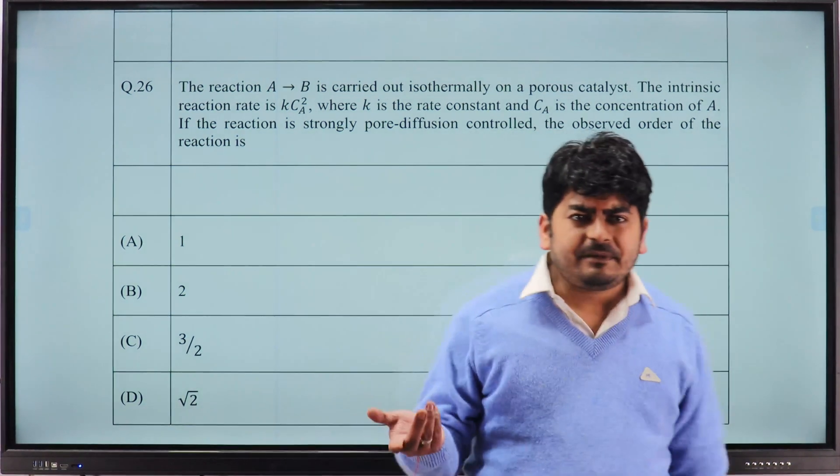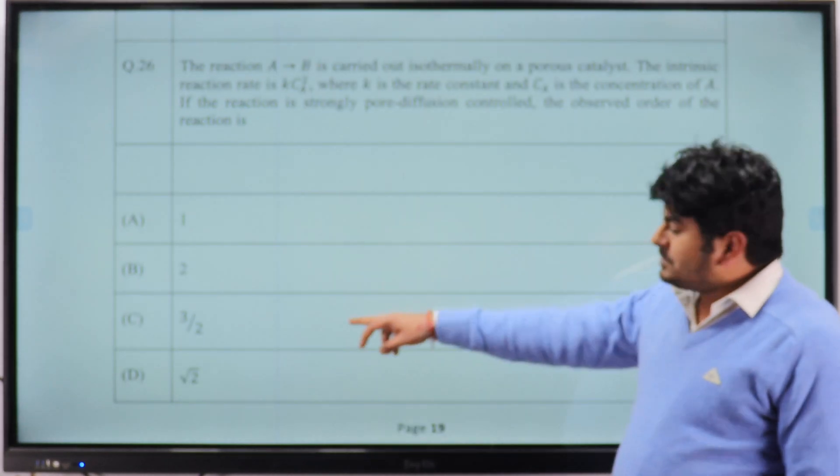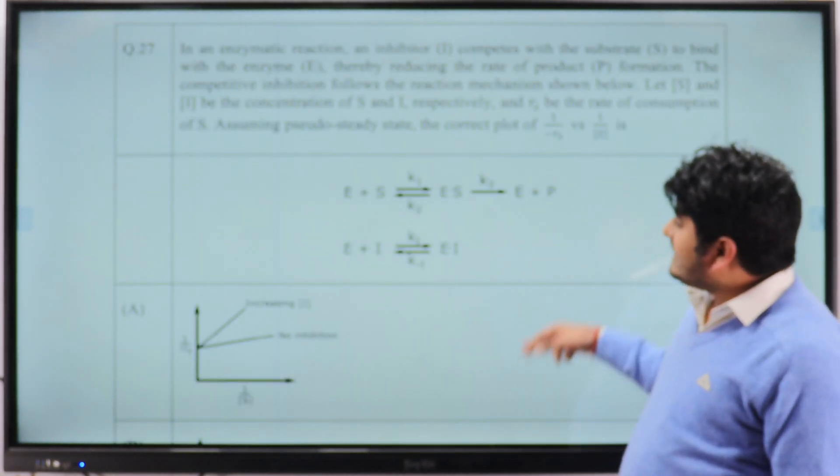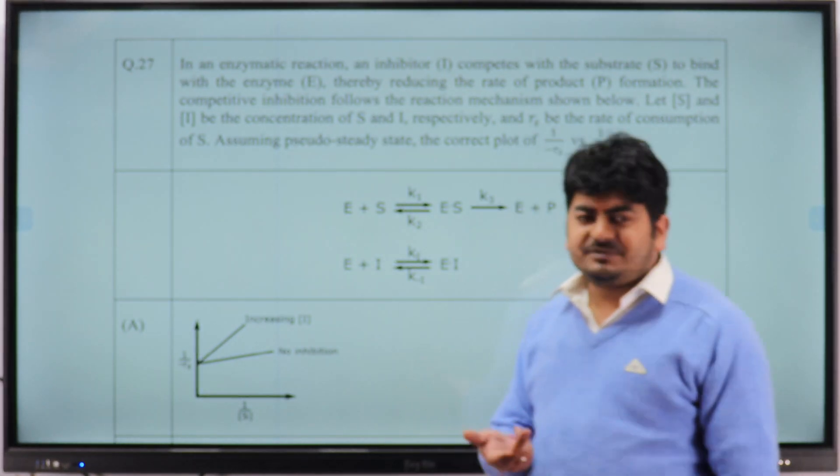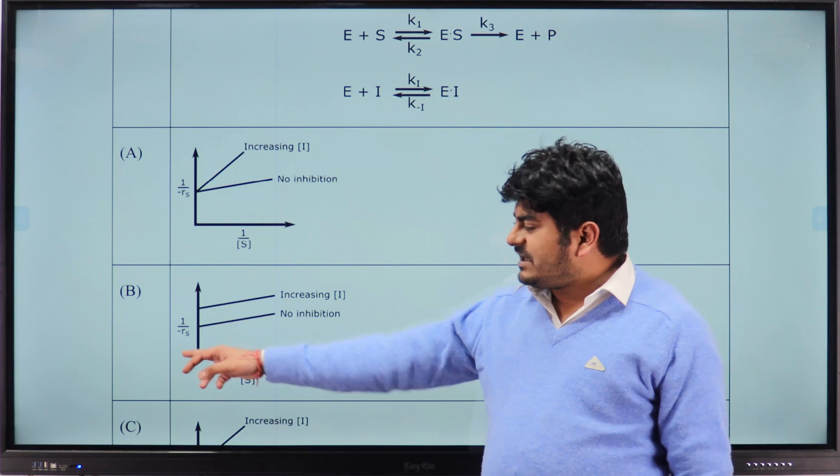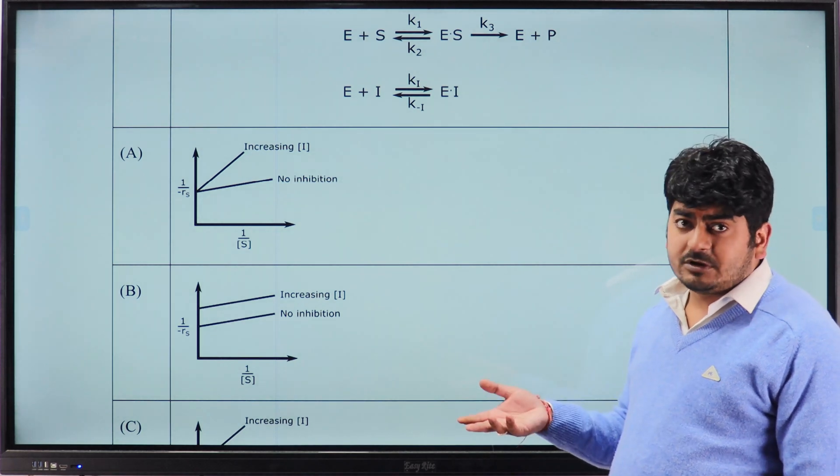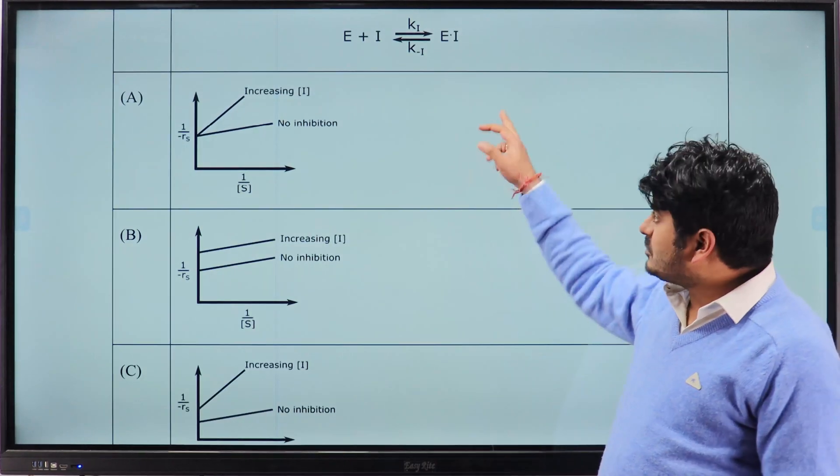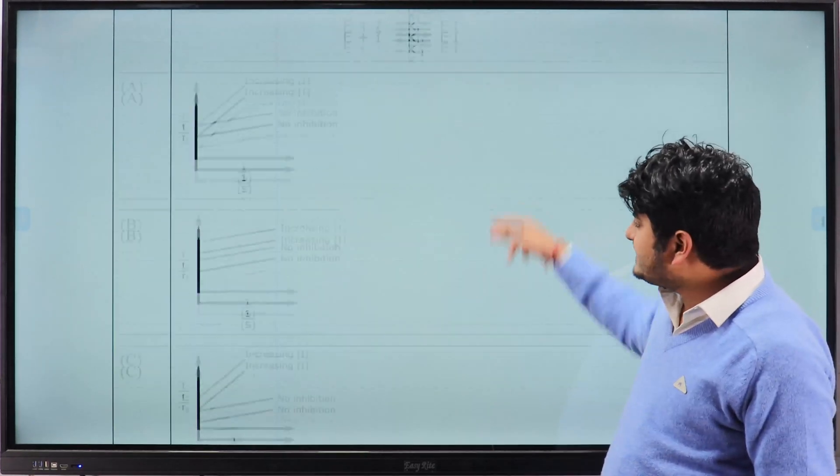Question 26, we have discussed this question many times, and if you see the previous year papers in last 20 years they have asked two times this type of question. Option C, 3 by 2 is the correct answer from Thiele modulus strong pore diffusion resistance regime. Question 27, enzyme reaction kinetics. We have already uploaded this video on the newly added topics on our YouTube channel. If you have seen that, you must have solved it because all these curves, the 1 upon reaction rate, 1 upon concentration of substrate, all these are the double reciprocal curves, also known as Lineweaver-Burk plots. So option A is the correct answer for this question where they are using the competitive inhibitor, so option A will be the answer.